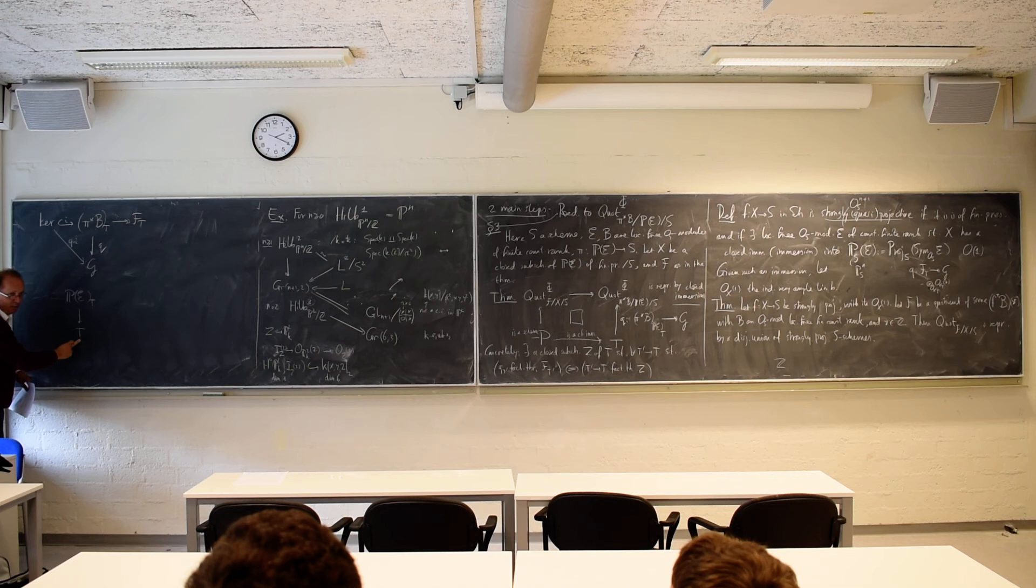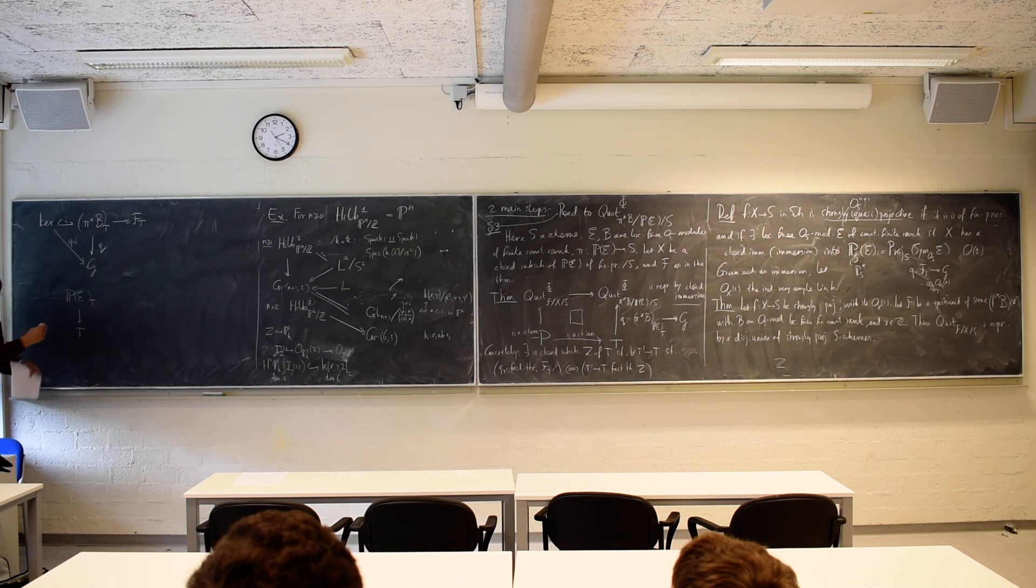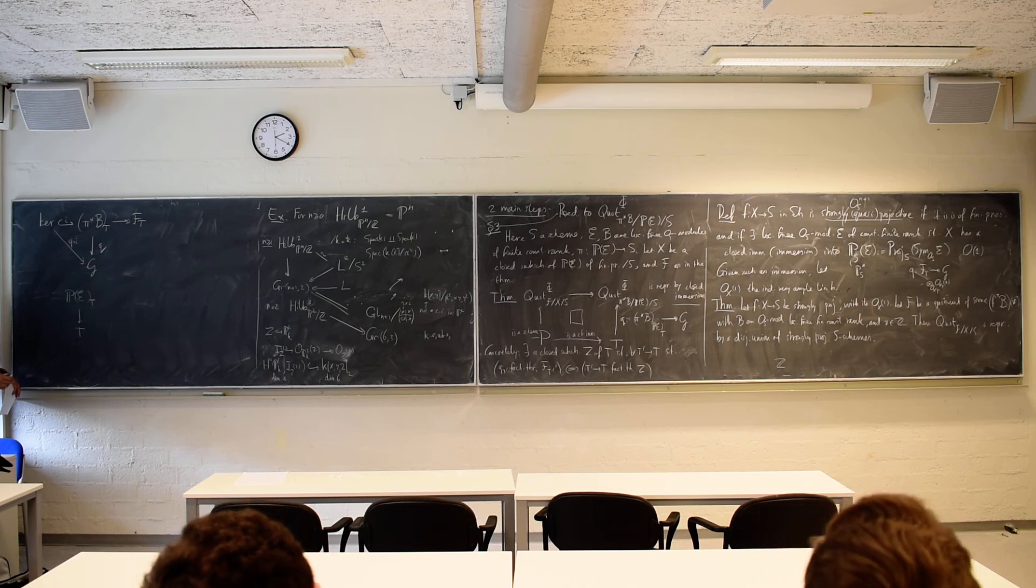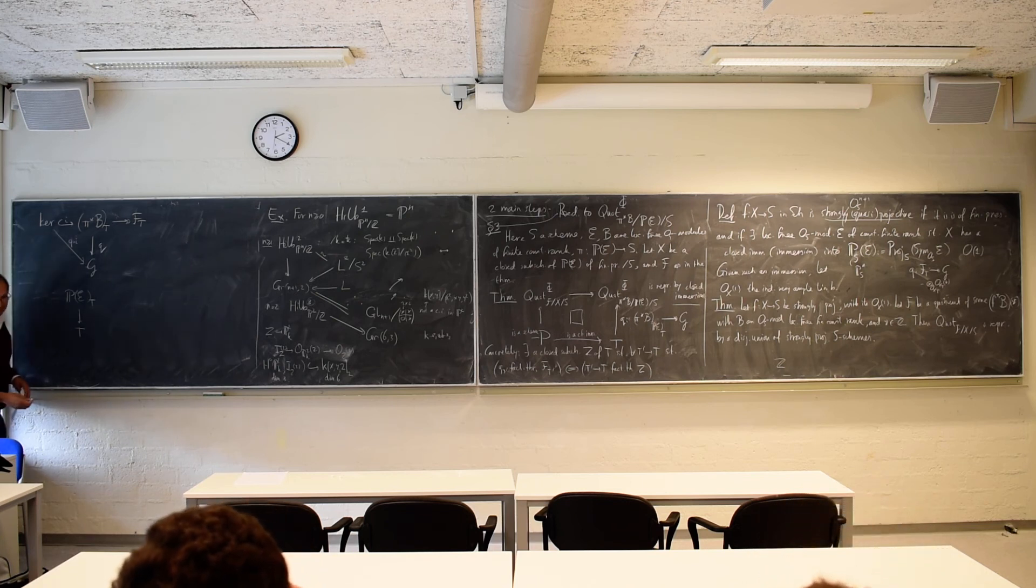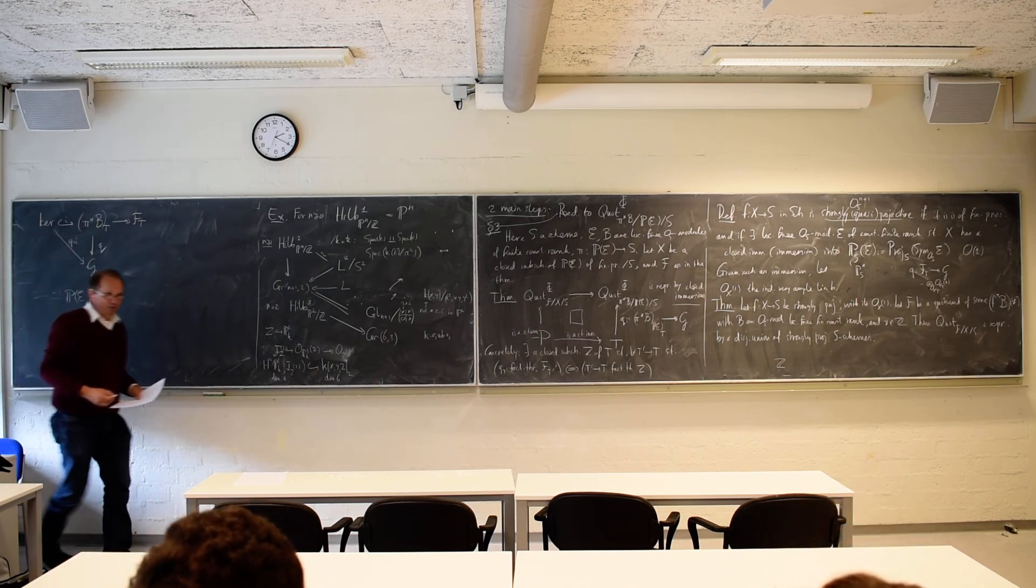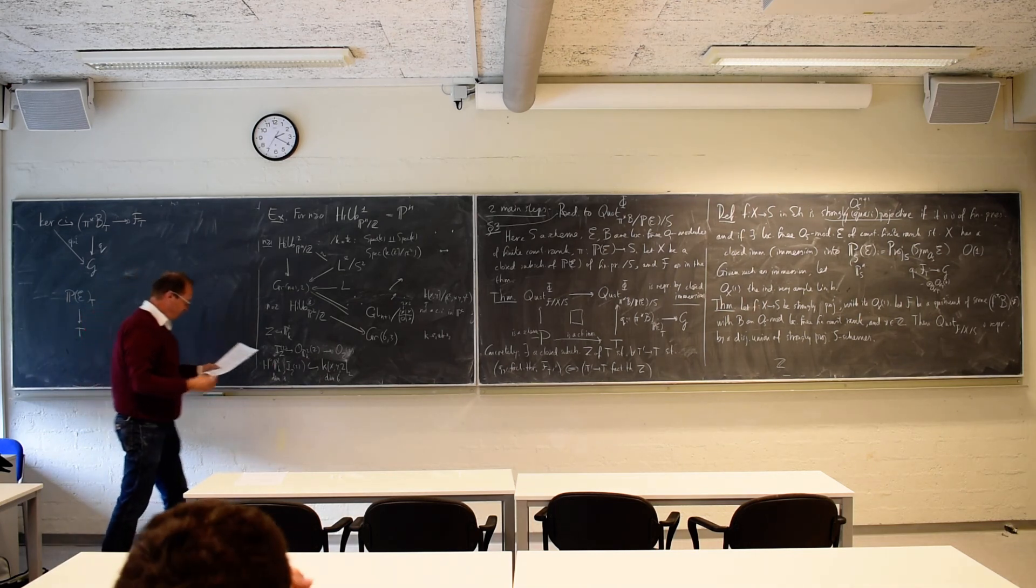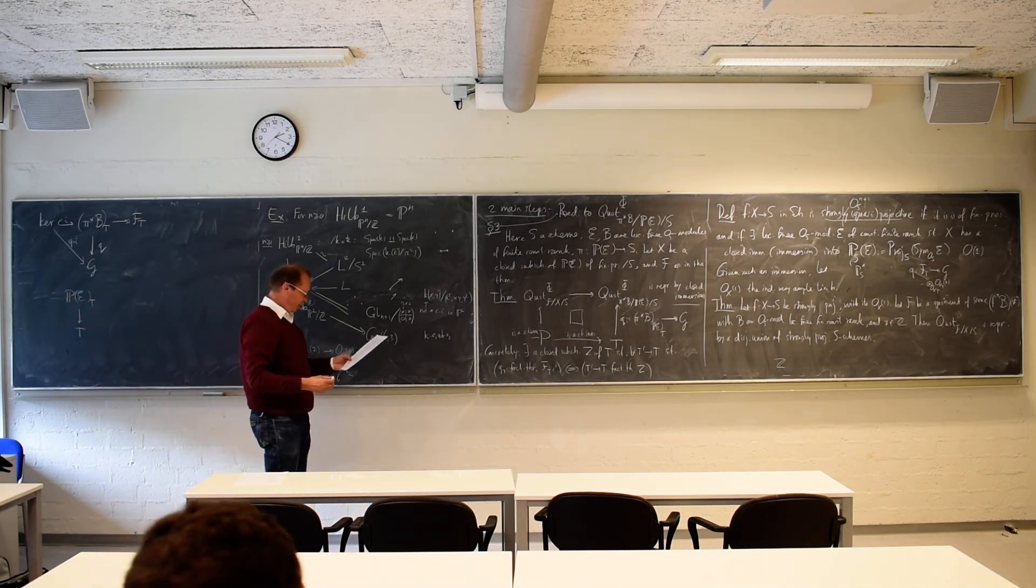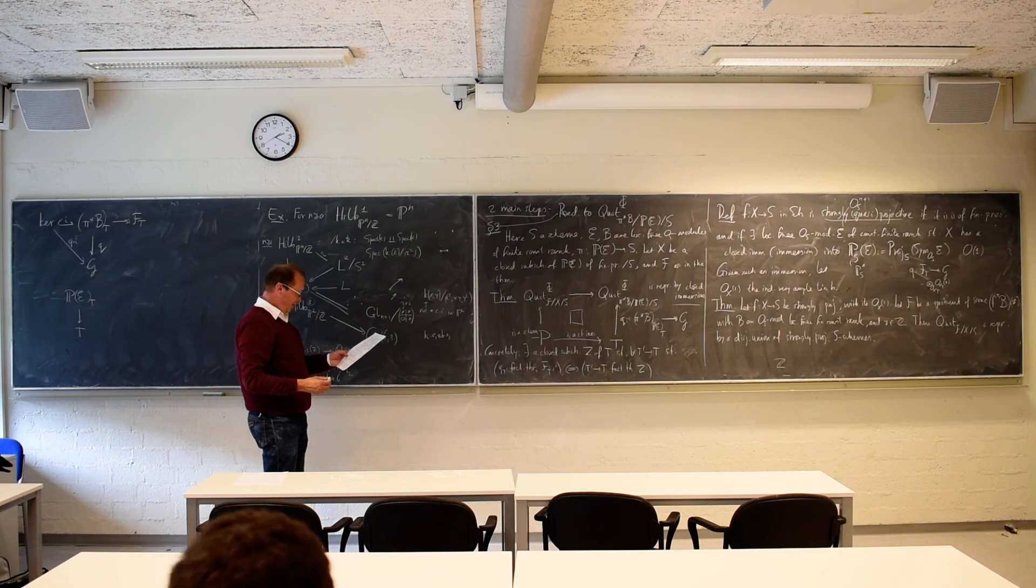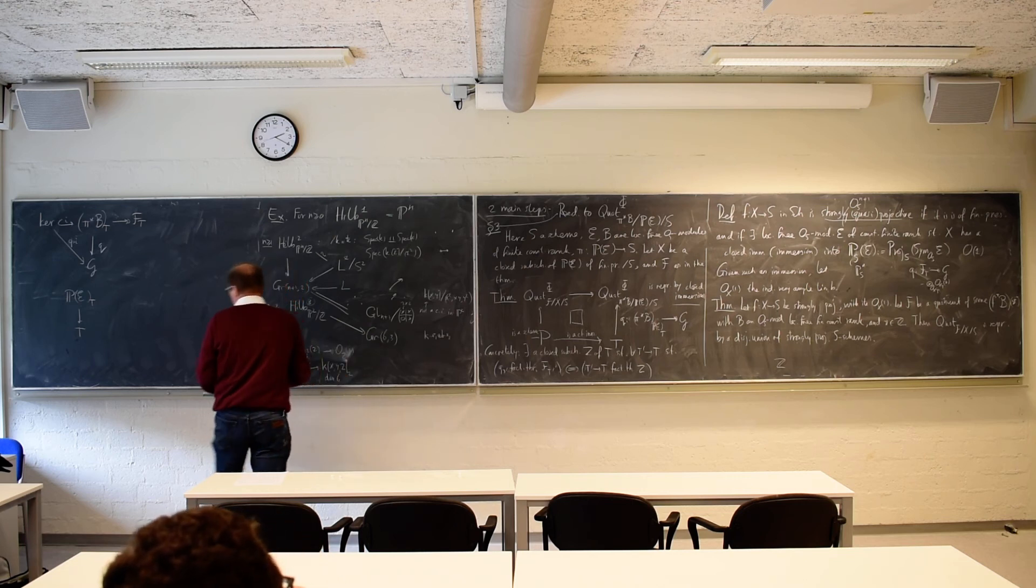And then you have a zero section of that. And you have this section. And the locus where they intersect. That is what you are after. Yeah? And then... It is, again, a proof by generalization. So now... You... Yeah. Okay. My notes, they give you that. And they give references where this is proved.